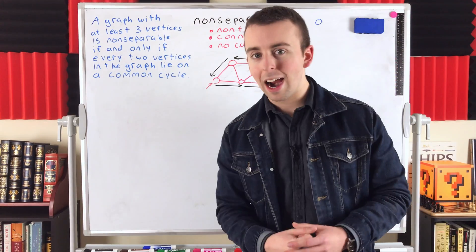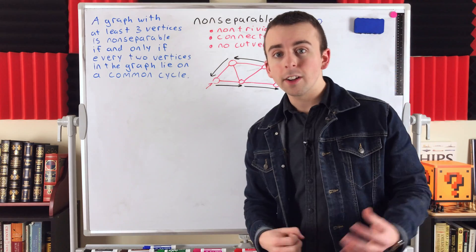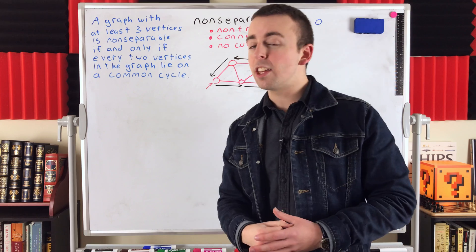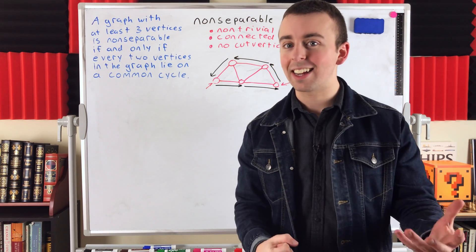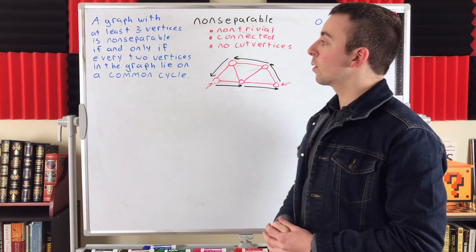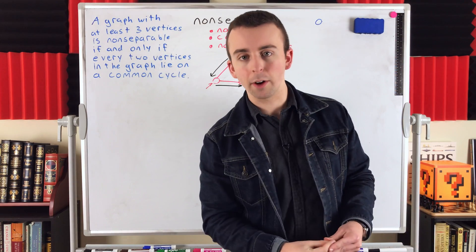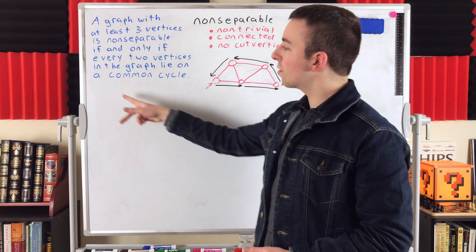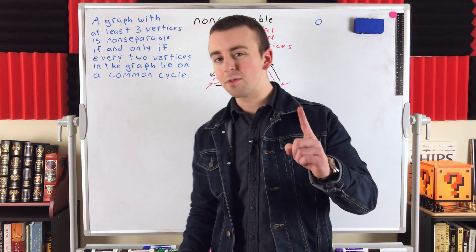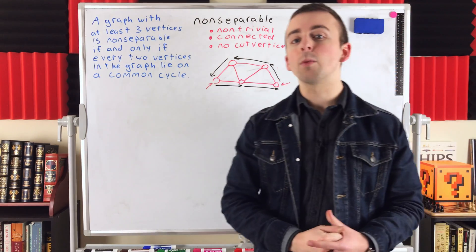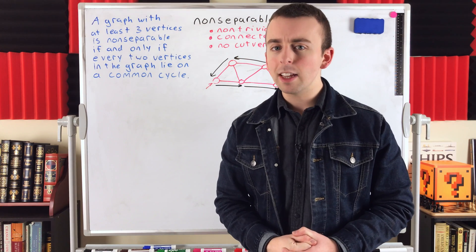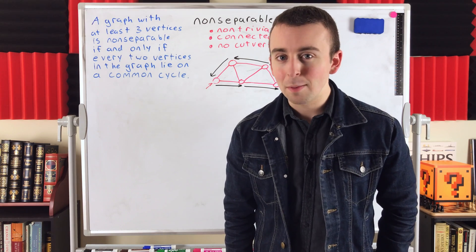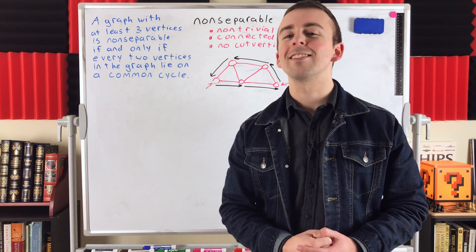So that's a bit about non-separable graphs. To go over the definition one more time: a graph is non-separable if it is non-trivial, connected, and has no cut vertices, meaning you cannot delete any one vertex from the graph and disconnect it. And the characterization: a graph with at least three vertices is non-separable if and only if every two vertices lie on a common cycle — we'll prove that in a later lesson. Hope this video helped you understand non-separable graphs. Let me know in the comments if you have any questions or video requests. Thank you very much for watching, and subscribe for the swankiest math lessons on the internet.